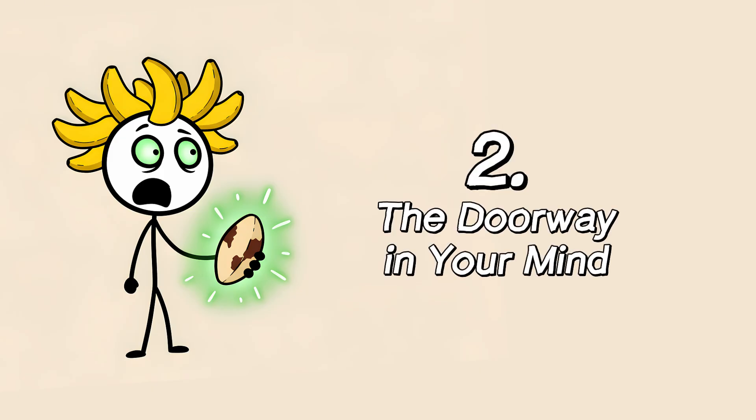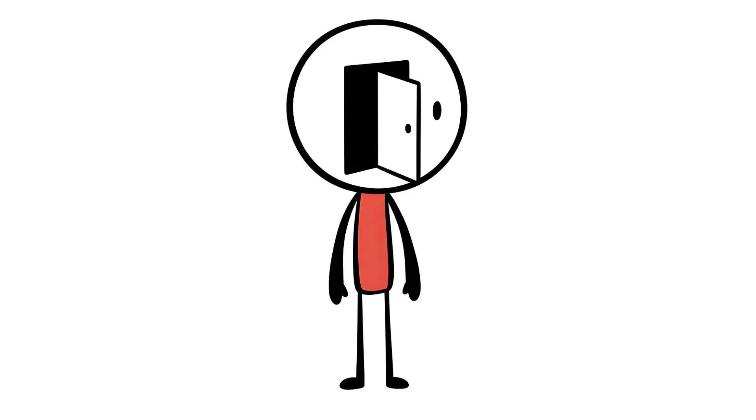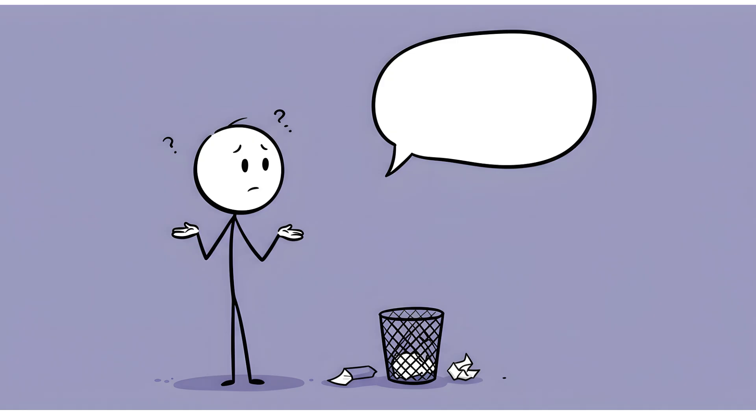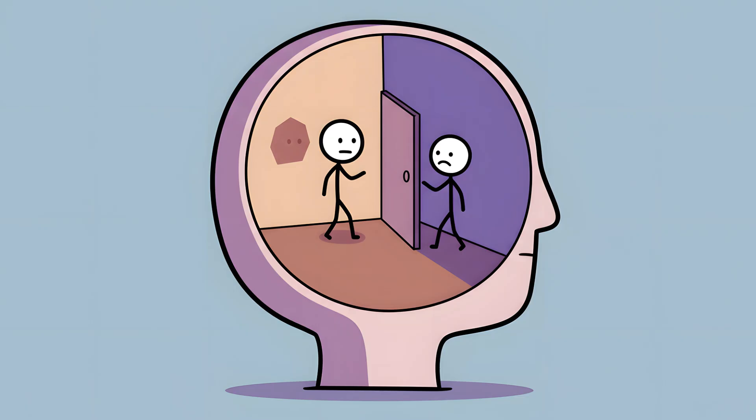Number two, the doorway in your mind. This is the final, most unsettling piece of the puzzle. It's not just physical doorways. It's not just event boundaries like phone calls or closing laptops. The most powerful doorways are in your own mind. Have you ever been in the middle of a sentence? A really important, well-crafted sentence. And suddenly, a completely unrelated thought barges in. Some random memory from third grade. Or a sudden panic about whether you locked your car. And just like that, the sentence you were crafting is gone. Utterly, irretrievably gone.